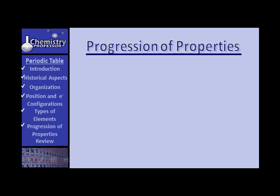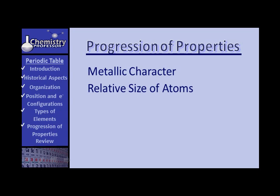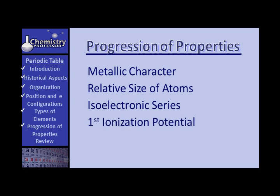Progression of properties. This is a really important section. Let's look at it. Let's start with metallic character. Then we'll talk about relative sizes of atoms. We'll talk about what is meant by an isoelectronic series. We'll discuss first ionization potential and briefly mention second ionization potential. Then we'll talk about electron affinity.